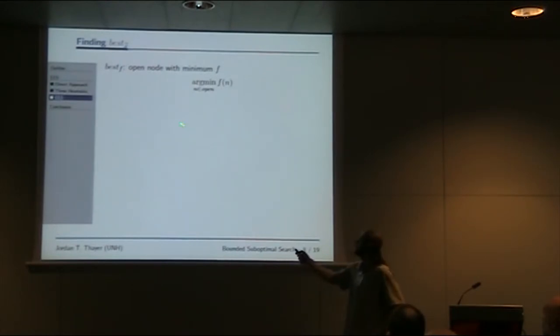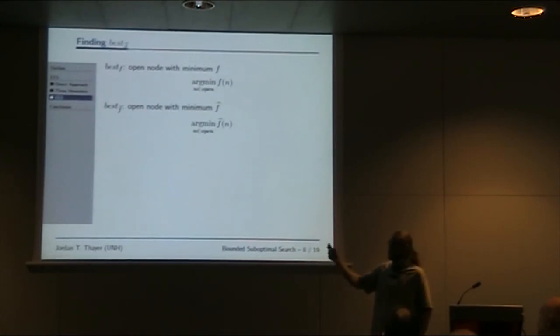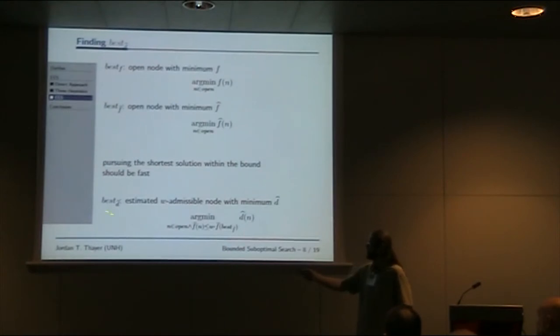Using these sources of information, we construct the nodes EES will consider while exploring the search space. The first is best F, the open node with minimum F value, which is a lower bound on total cost. We also use best F-hat, the open node with minimum F-hat. The difference is best F represents a lower bound on solution cost, and best F-hat represents our best estimate on solution cost.